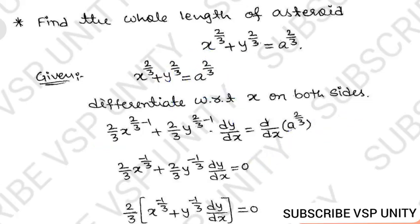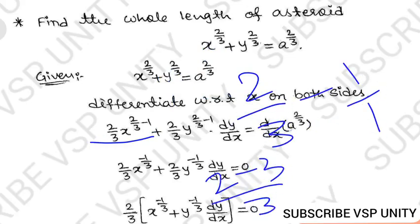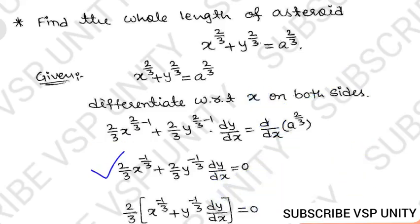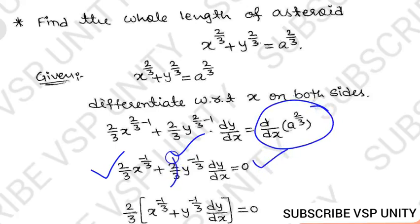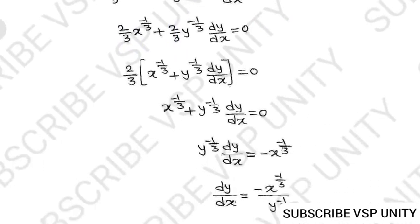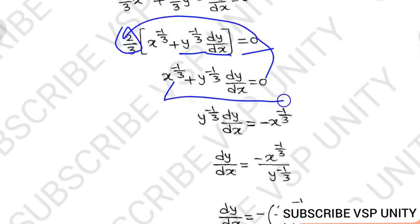Since 2/3 − 1 = −1/3, this becomes: (2/3)x^(−1/3) + (2/3)y^(−1/3)·(dy/dx) = 0. Taking (2/3) common and cancelling, we get x^(−1/3) + y^(−1/3)·(dy/dx) = 0. Bringing x^(−1/3) to the other side gives y^(−1/3)·(dy/dx) = −x^(−1/3).